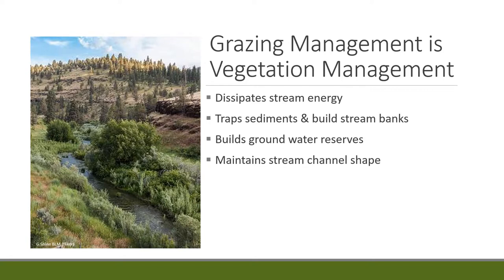When developing riparian vegetation, you need enough of the right quality to dissipate energy in high flows, vegetation that will trap sediment and build stream banks especially during high flow periods, and vegetation that builds up groundwater reserves to move the water table up. You also need good infiltration and must maintain a stream channel shape — often we want the deepest and narrowest stream that will still dissipate energy in spring and access its floodplain.